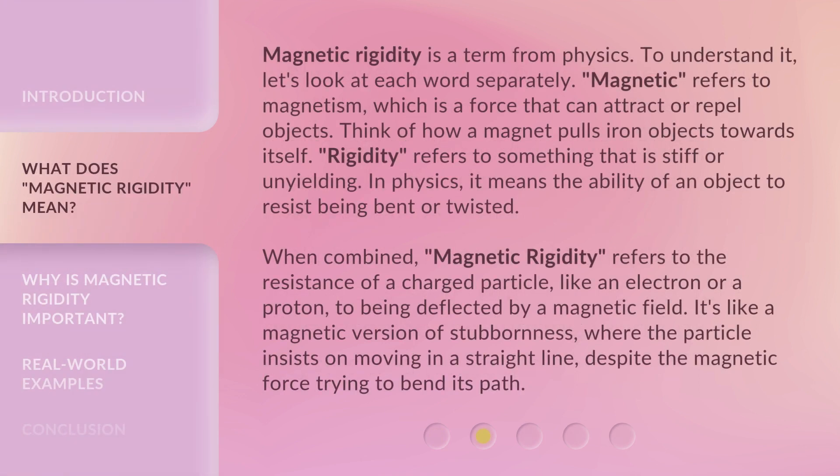Magnetic rigidity is a term from physics. To understand it, let's look at each word separately. Magnetic refers to magnetism, which is a force that can attract or repel objects. Think of how a magnet pulls iron objects towards itself. Rigidity refers to something that is stiff or unyielding. In physics, it means the ability of an object to resist being bent or twisted.